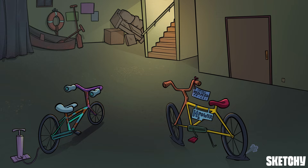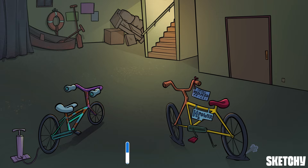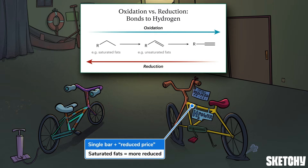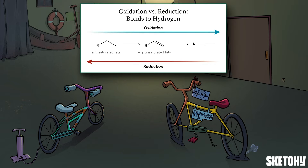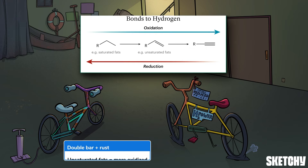In addition to looking at oxygen atoms, you can also tell if oxidation or reduction has occurred by looking at the number of bonds to hydrogen atoms. This hydrogen fuel cell battery pack on our reduced bike is there to let you know that the more bonds there are to hydrogen atoms, the more reduced the molecule is. This is most important when comparing saturated and unsaturated fats. The carbon atoms in saturated fats are fully saturated with hydrogen atoms, making them more reduced — with single bonds between all the carbons, just like the single crossbar on our reduction bike. In contrast, carbon atoms in unsaturated fats are connected by double bonds, having fewer bonds to hydrogen and being more oxidized, symbolized by the double crossbar on our oxidation bike.